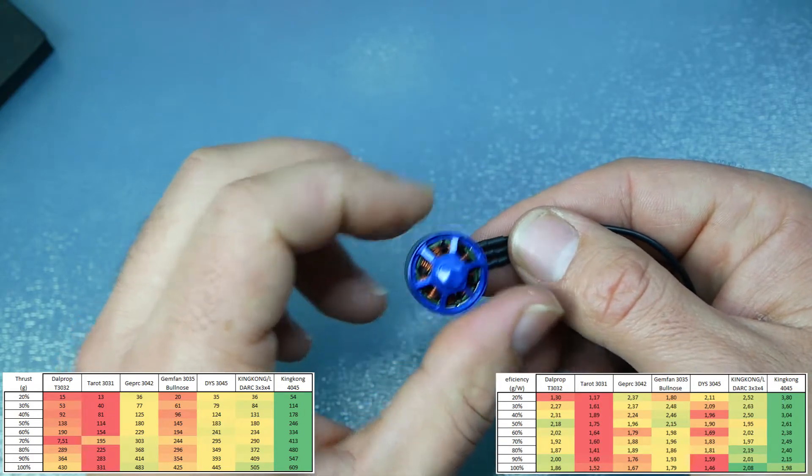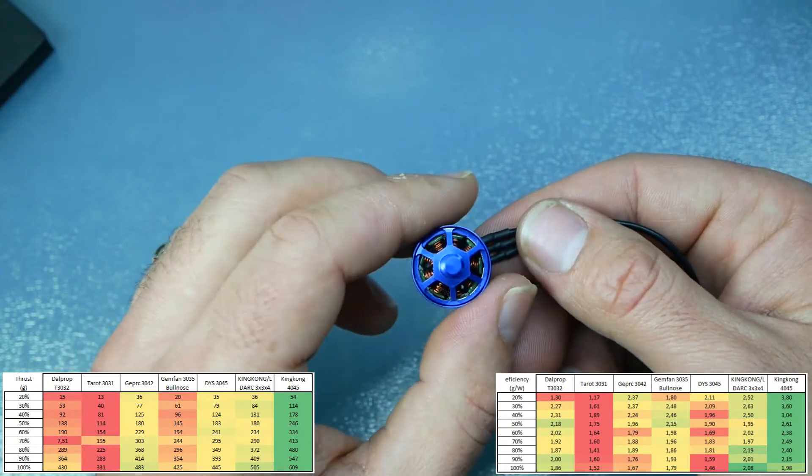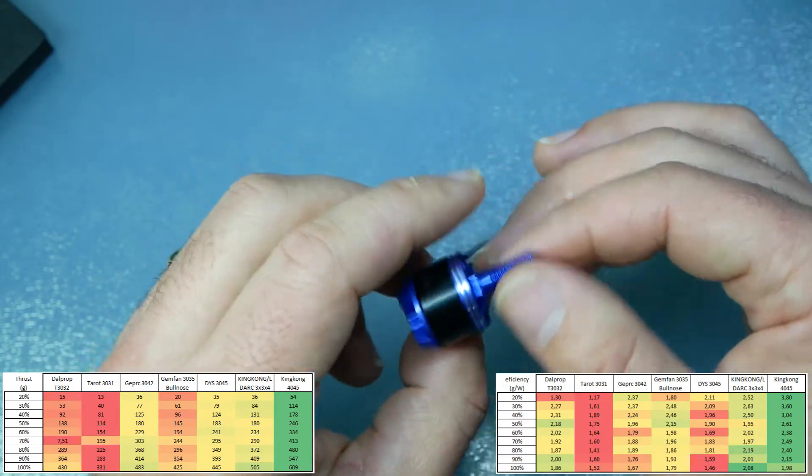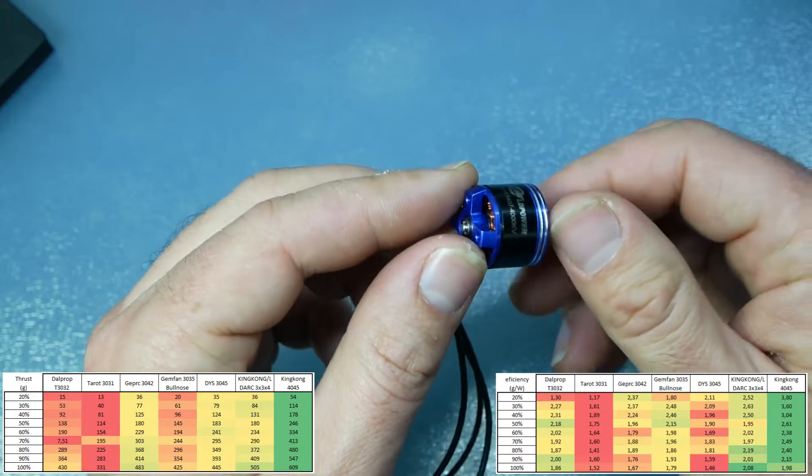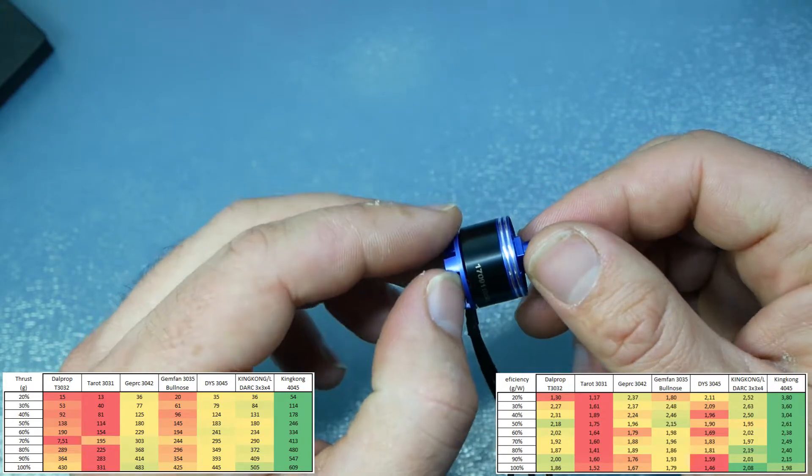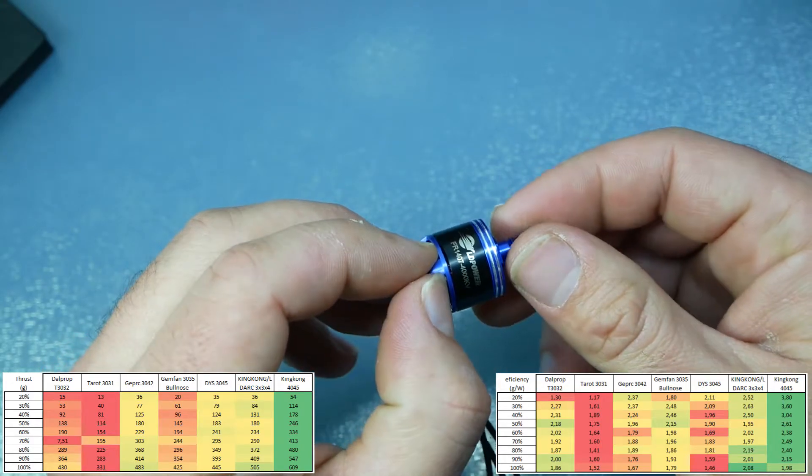And the consumption was higher than the 4-blade propellers. So I think the most balanced propeller for this motor was the 4-blade from King Kong that I would use.